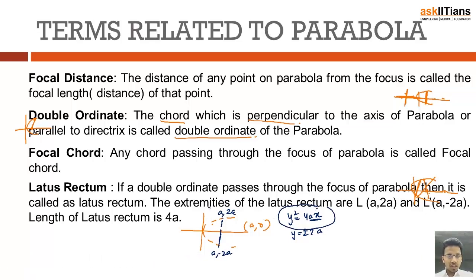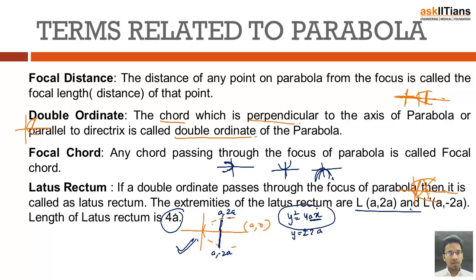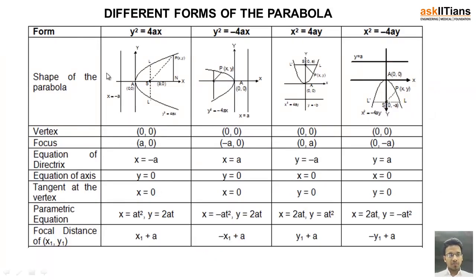There are other forms of parabola — a parabola can be reversed, upward, or downward. For those forms, x and y swap roles or take negative values. Once you understand this standard form, the others are easy to interpret. The length of the latus rectum is 4a. These were the key terms related to parabola. The summary of all different parabola forms with vertex and focus coordinates is provided for reference.